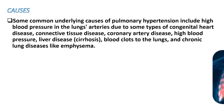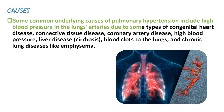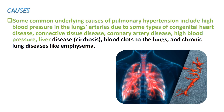Causes: Some common underlying causes of pulmonary hypertension include high blood pressure in the lung arteries due to some types of congenital heart disease, connective tissue disease, coronary artery disease, high blood pressure, liver disease or cirrhosis, blood clots to the lungs, and chronic lung diseases like emphysema.